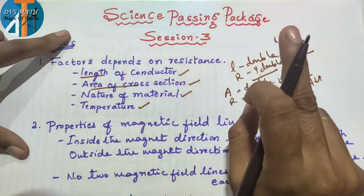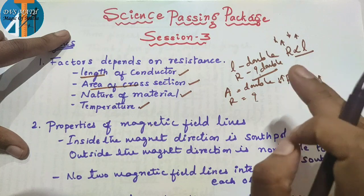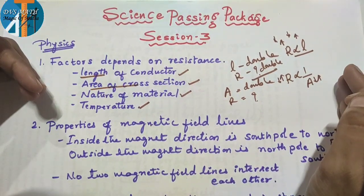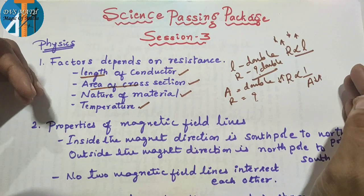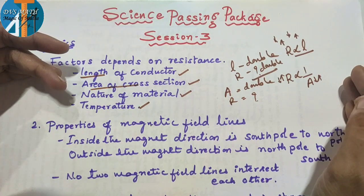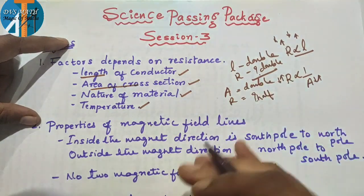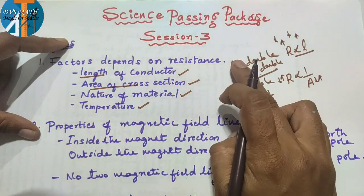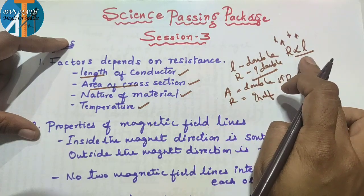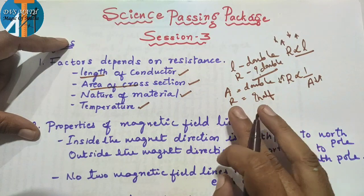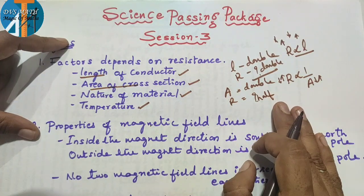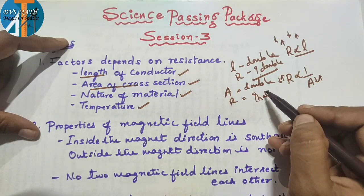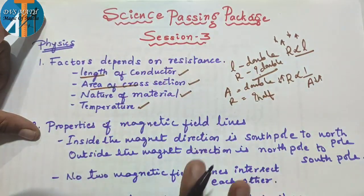For example, here is one unit of area. If it has two units, the resistance reduces to half. Length is directly proportional to resistance; area of cross-section is inversely proportional to resistance. This is important if resistance questions are asked.